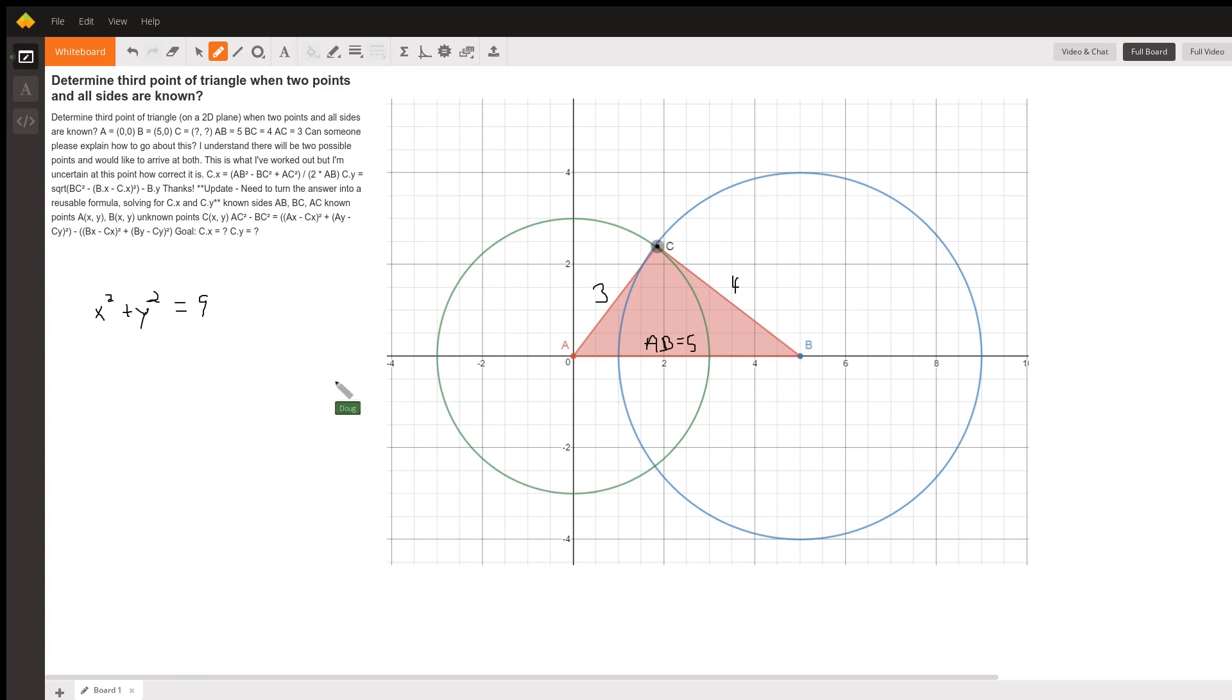And the equation of the second circle, X minus 5, the quantity squared, plus Y squared has to equal 16.